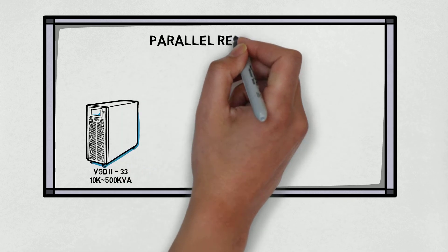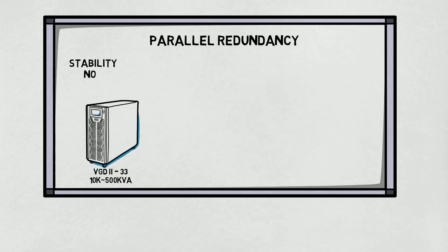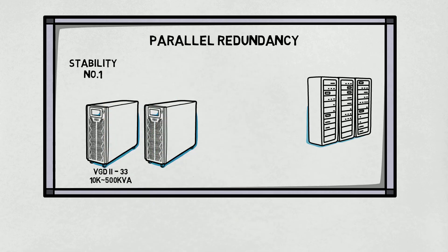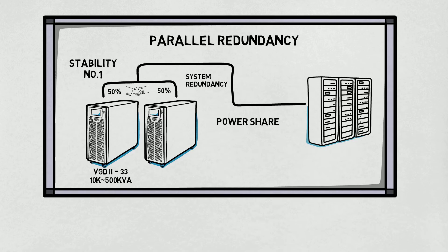Second, parallel redundancy. Critical operations need stability. Parallel redundancy combines multiple modules to support equipment, achieve system redundancy and power sharing, which balances load to each UPS module equally.